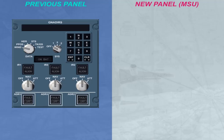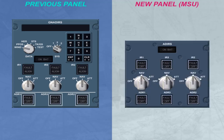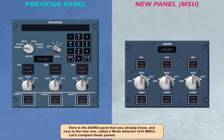Here is the ADERS panel that you already know, and here is the new one, called a Mode Selector Unit or MSU. Let's compare these panels.